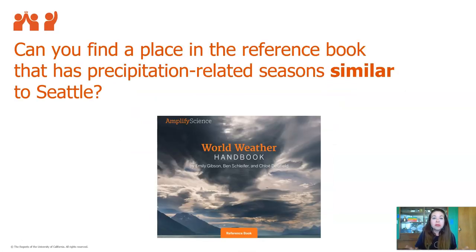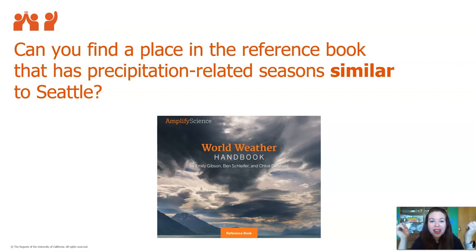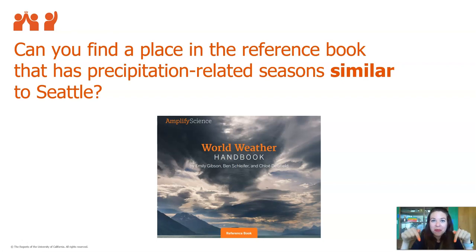Can you find a place in this book that has precipitation-related seasons similar to Seattle's? Remember, we're looking for that big dip in the middle of the year. Pause the video, go check out the World Weather Handbook, and see if you can find a city that matches the pattern for Seattle. I'll see you in a few.